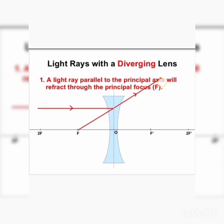When the outward bend occurs, if you look at the point and trace the imaginary extension of the light ray, you will find that it meets the principal focus point on the same side as the incoming ray. That is the first case of image formation for the concave lens.